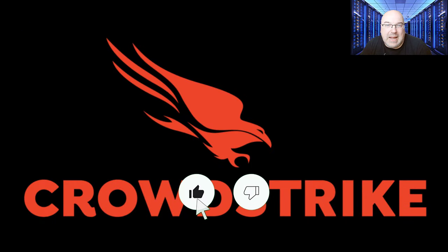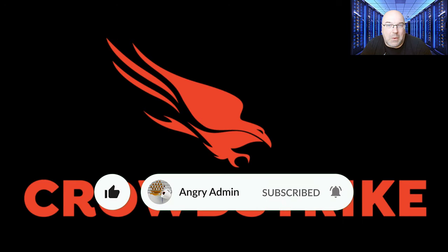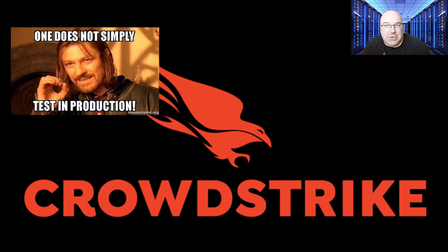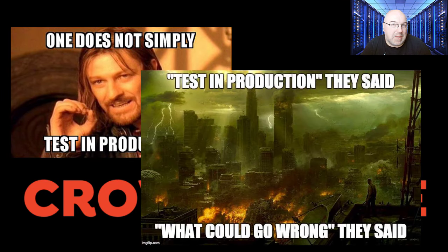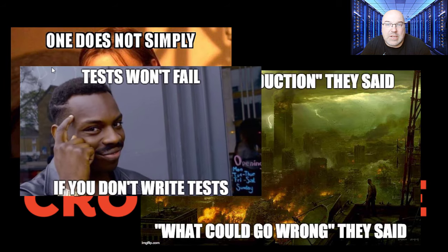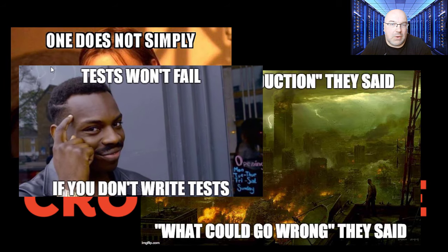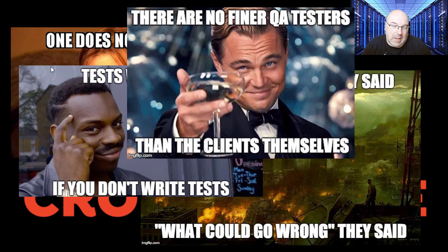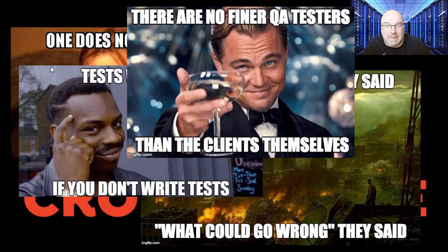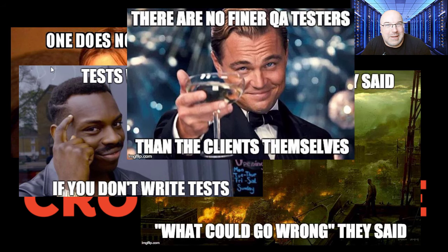Now let's talk about why CrowdStrike was at fault. The primary issue was a lack of redundancy and resilience in the update deployment process. While it's common for software updates to occasionally cause issues, the severity and widespread nature of the outage highlighted significant gaps in CrowdStrike's quality assurance and testing protocols. And this is a good place to remind you all: don't test on production, and don't roll out anything on a Friday.